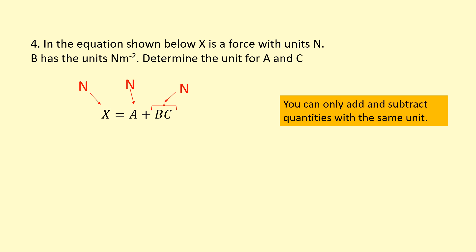We're also told that B has the units of newtons per meter squared. So what does the unit for C need to be in order that B times C has the unit of newtons? C is going to have to be meters squared, so it multiplies with the newtons per meter squared and becomes newtons.